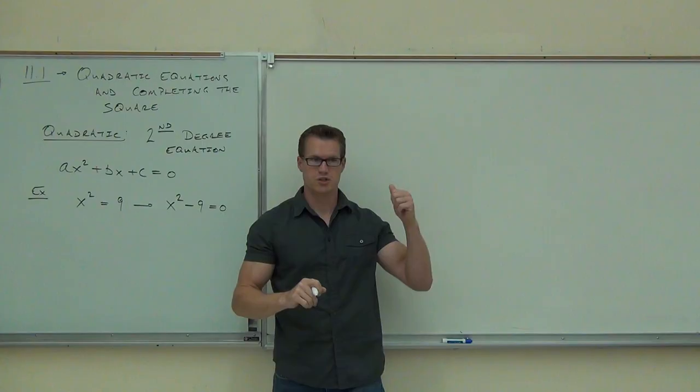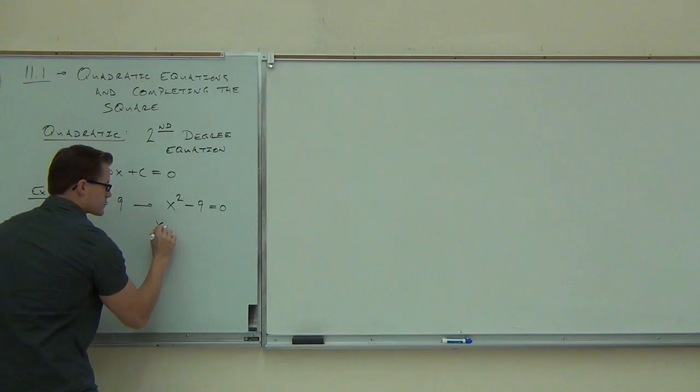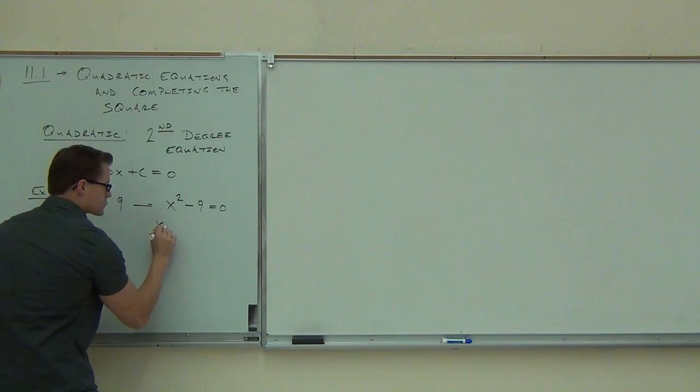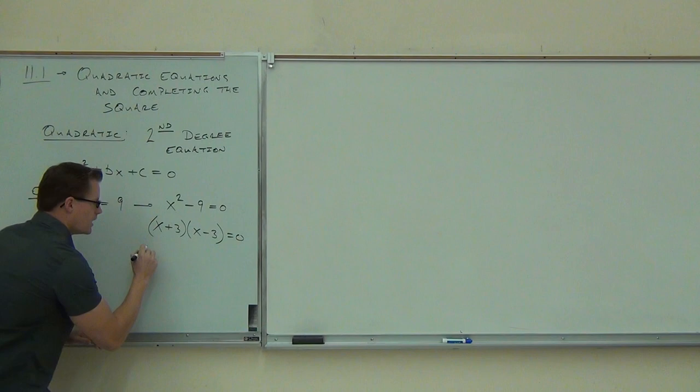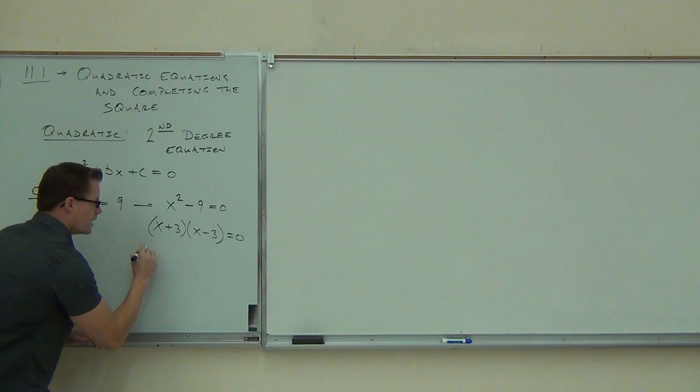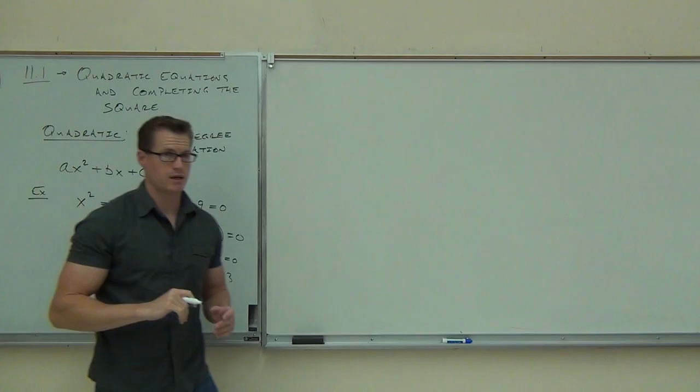So I'd subtract 9 and this becomes x squared minus 9 equals 0. That's a difference of squares — x plus 3 times x minus 3 equals 0. So x plus 3 equals 0, x minus 3 equals 0. Therefore x equals negative 3, x equals positive 3.